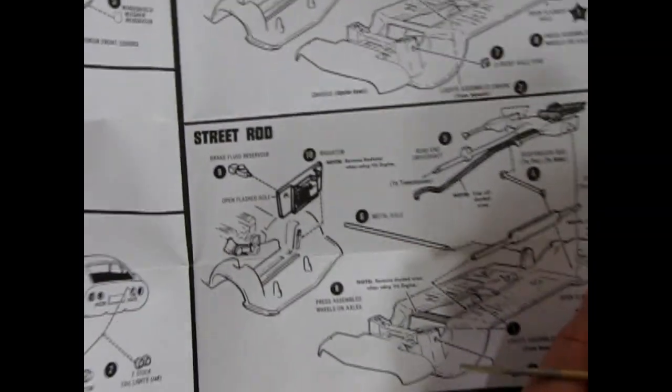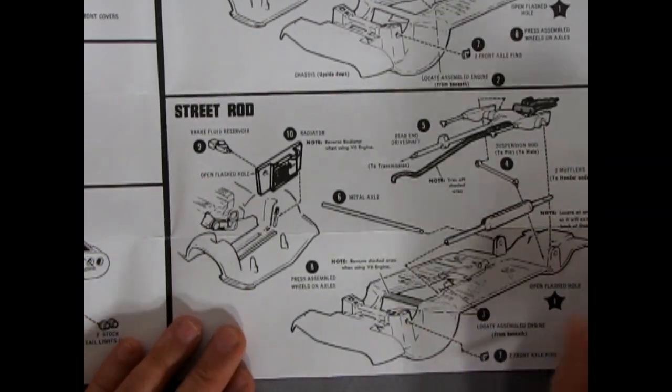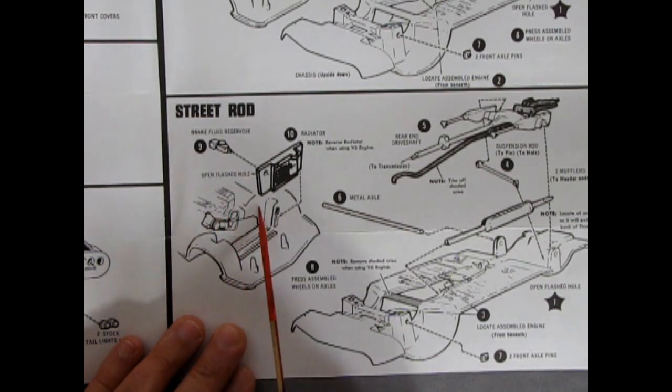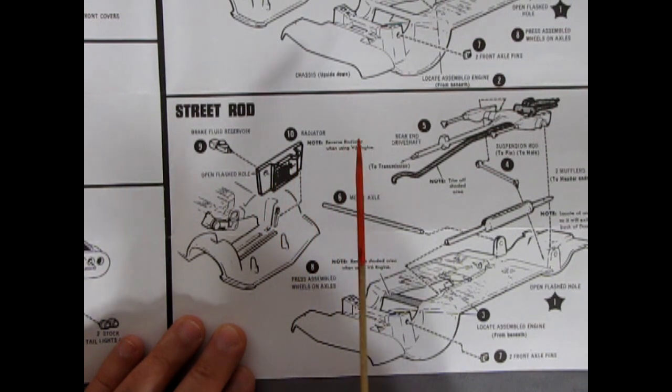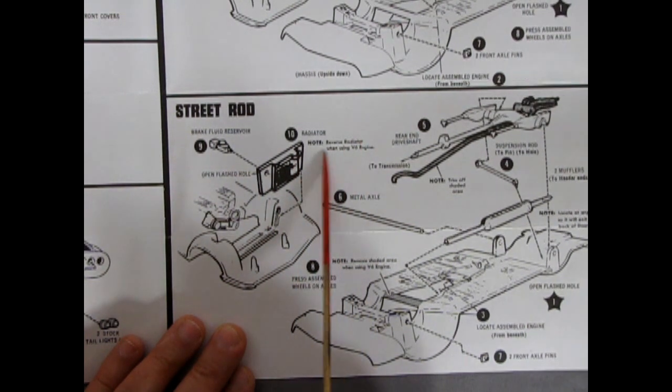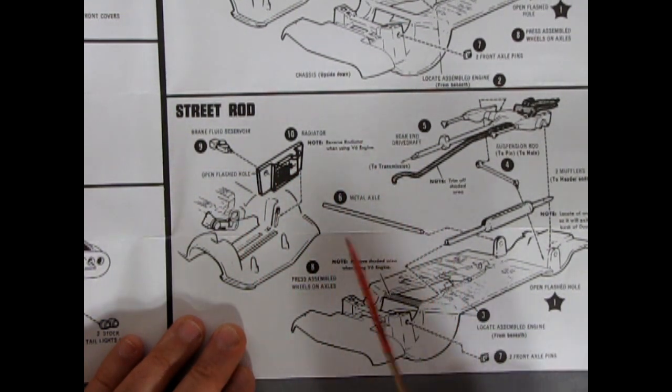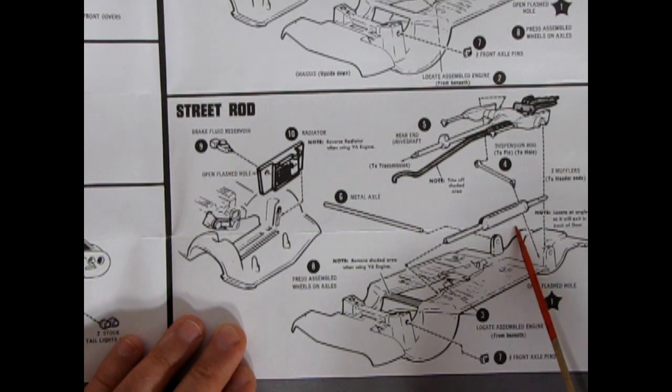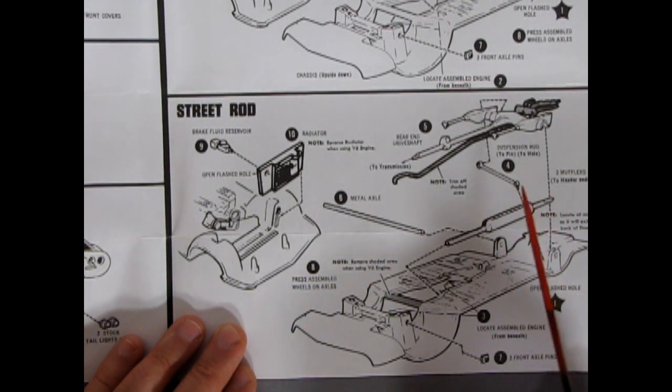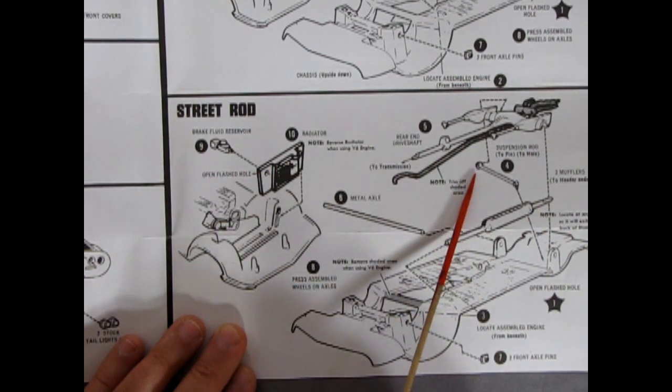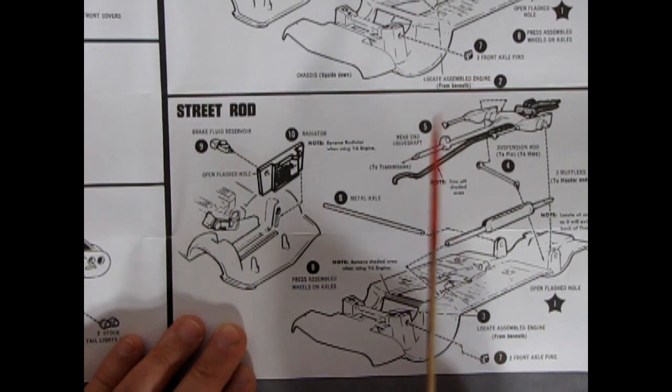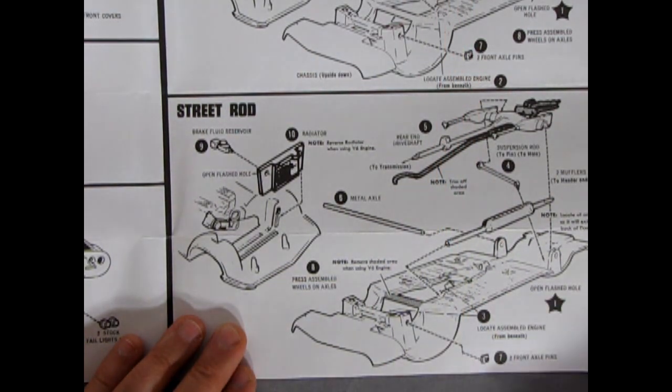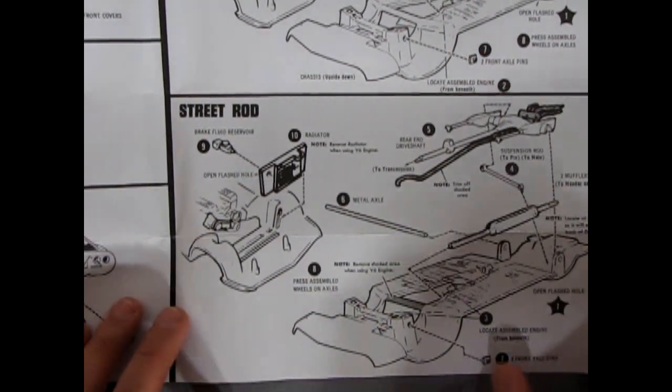Then down here for your street rod. You have the brake fluid reservoir going in through that same hole that was on the radiator. Oh you reverse the radiator. You turn it around in there. Okay and then there's the rear end. It's saying to remove that. And then you get this like straight muffler sort of pipe going in there. Looks like a cross brace in there. Oh there was one up there too. And then the little front axles will go in there.